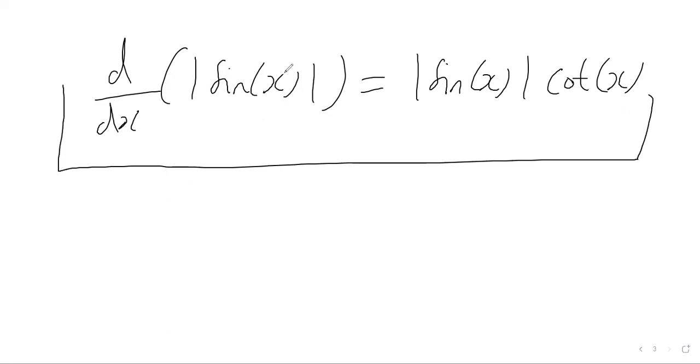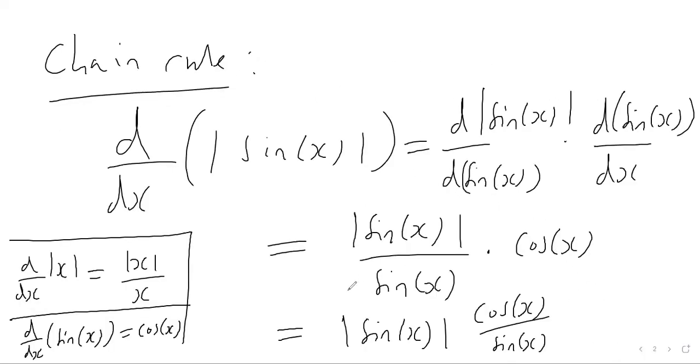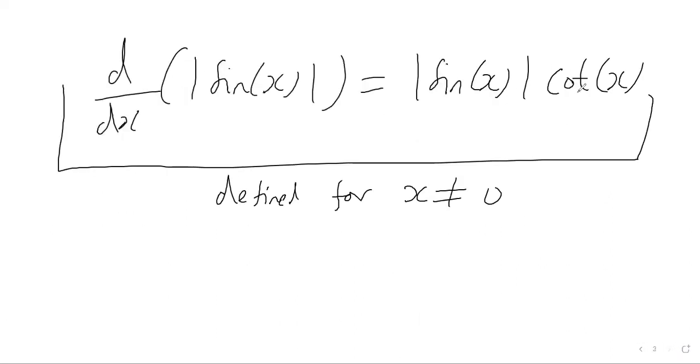However, it's worth noting where this function is defined. This is only defined for all real values of x apart from zero. x can't be zero because the cotangent function evaluated at zero does not exist—cot of zero is undefined.